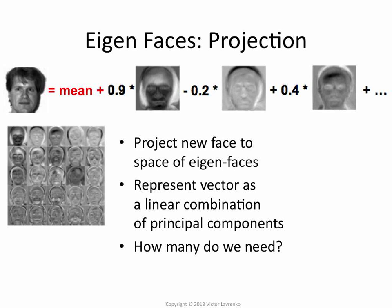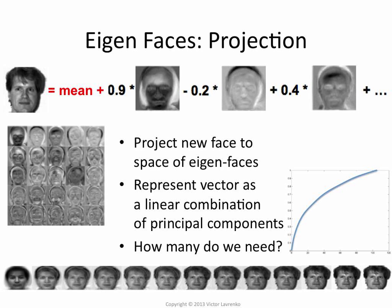You can take the first one, or the first two, or the first three — as many as you want as a representation. As you change the number of eigenvectors in that equation, you get an interesting progression of faces. Let's assume that's just the mean face: if you don't take any eigenvectors, you get the average-looking face. Add the first eigenface and you get something like that; add the third and something like that. As you keep doing that, eventually you'll recover the original bitmap.